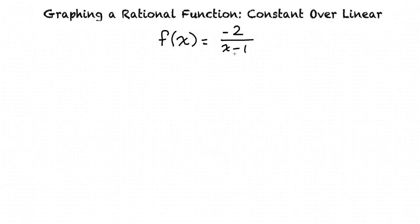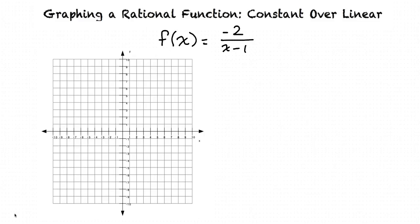If we want to graph this function, we first should show the asymptotes on a graph. So we will now show a graph. From our function, we can see that we have one vertical asymptote at x equals 1, and we have one horizontal asymptote at y equals 0.